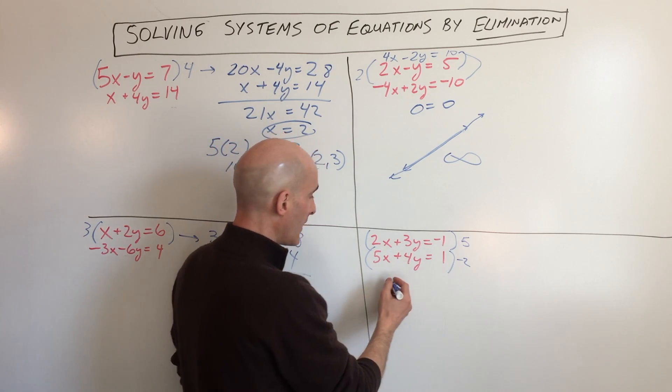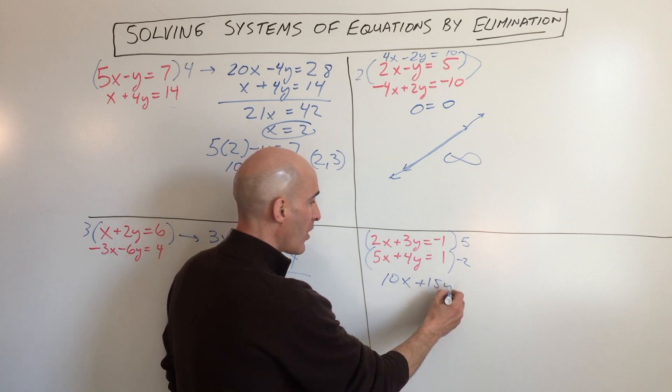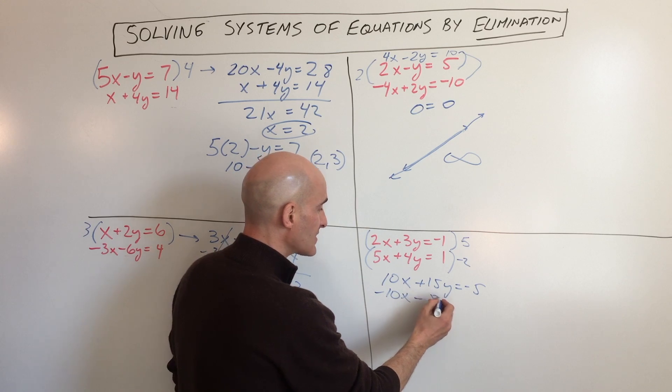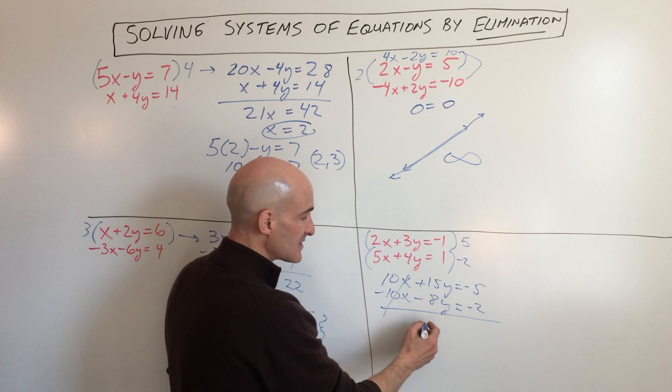So if we do that, we get 10x plus 15y equals negative 5. In the bottom equation, we get negative 10x minus 8y equals negative 2. If we add those together, the x's cancel.